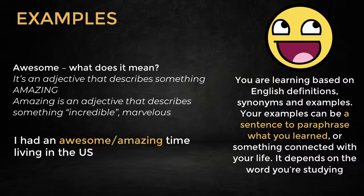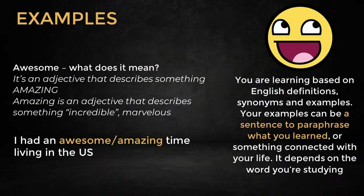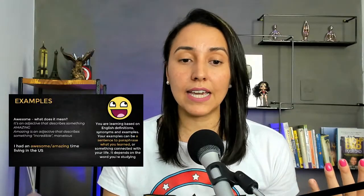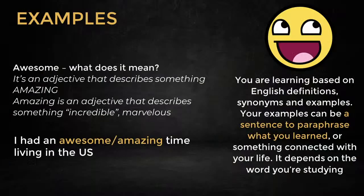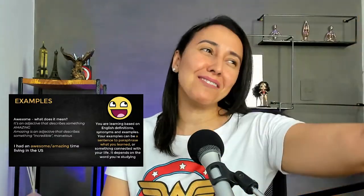Let's take a look at one simple word: awesome. Let me know if you know the word awesome in the comments — it's a popular word. If you google it or look it up, you will see that awesome is an adjective describing something amazing. So if you had an amazing vacation, you can say it was awesome. But if you don't know amazing — no problem, we go deep, we multiply. What is amazing? Amazing is an adjective that describes something incredible, marvelous. So: I had a marvelous vacation. It was amazing.